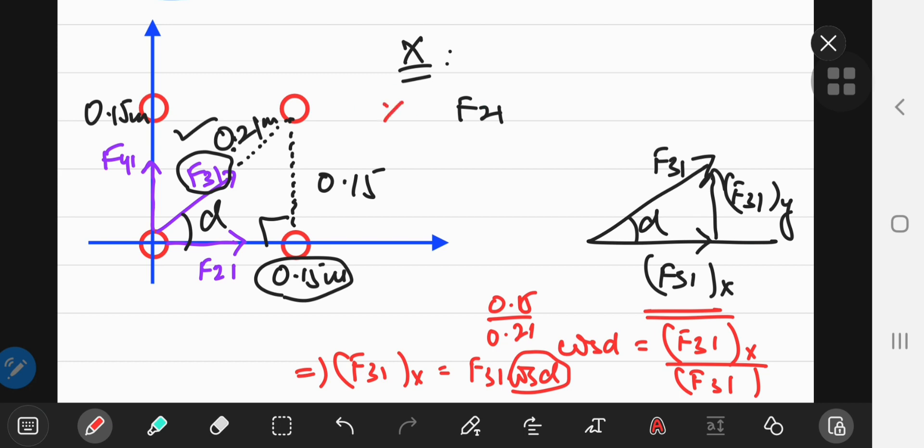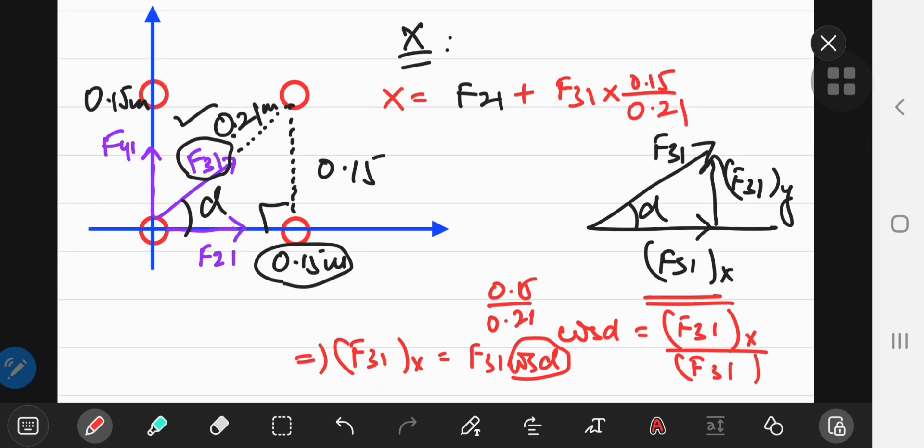So the x component of the resultant force is F sub 2, 1 plus F sub 3, 1 times 0.15 divided by 0.21. And of course, if you look at F sub 4, 1, it's a force completely in the vertical direction. So it has 0 horizontal component.